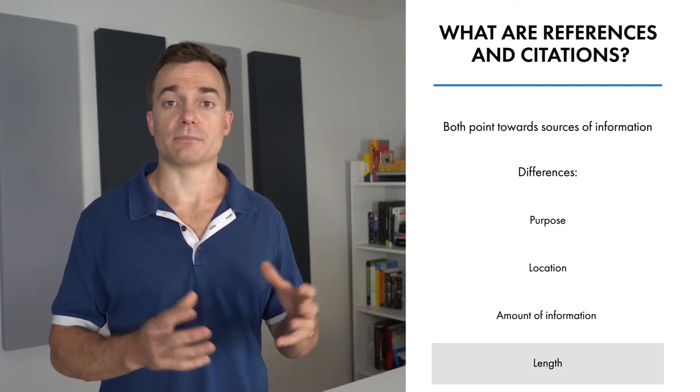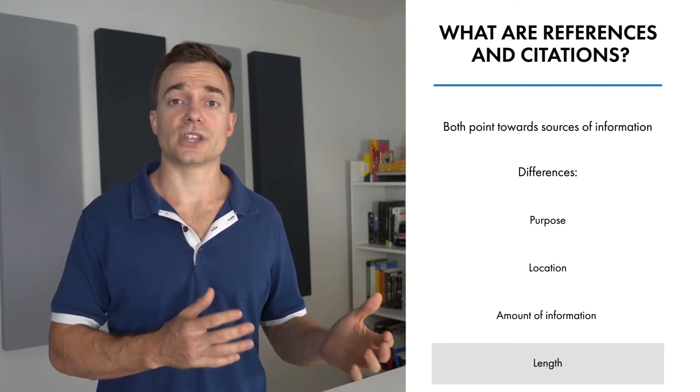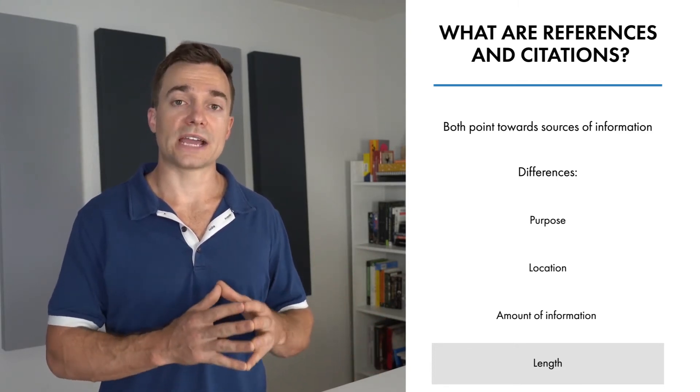Length - citations are short, either comprising the last names of authors and the year of publication or appearing as footnotes. In contrast, references are long and can run to several lines.